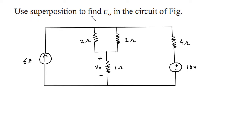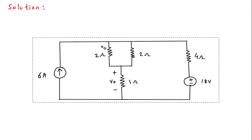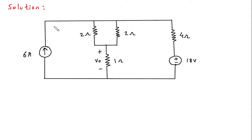Use superposition to find Vo in the circuit. We have to find Vo using superposition theorem. First of all we will redraw the circuit. Vo is equal to V1 plus V2, since there are two independent sources.